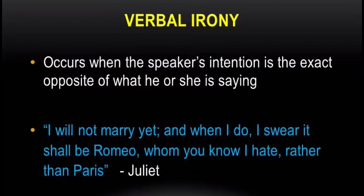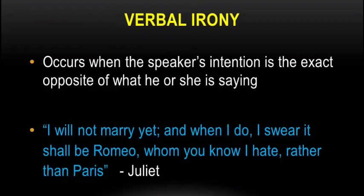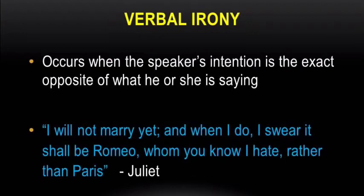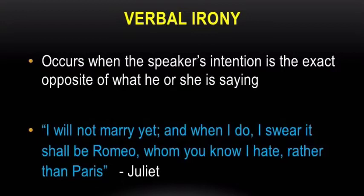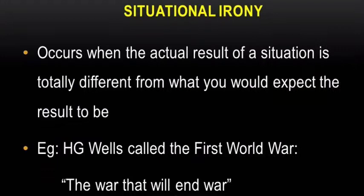Verbal irony occurs when the speaker's intention is the exact opposite of what he or she is saying. In Romeo and Juliet, Juliet says, 'I will not marry yet, and when I do I swear it shall be Romeo, whom you know I hate, rather than Paris.' Juliet actually dislikes Paris and adores Romeo, and tells her mother ironically that whenever she would marry it wouldn't be Paris but Romeo, whom she claims to dislike — thus confusing her mother.